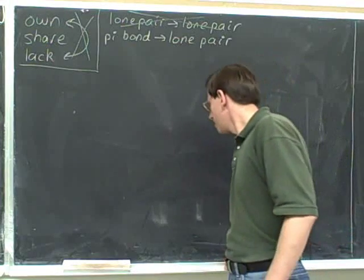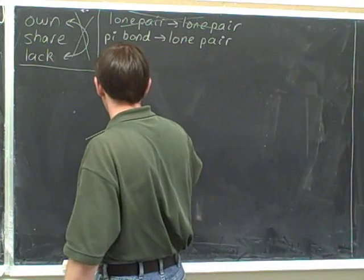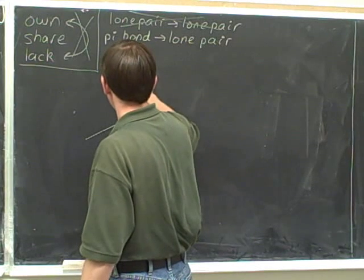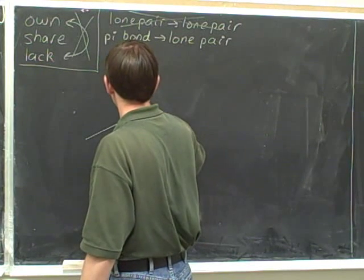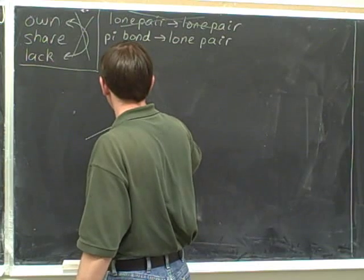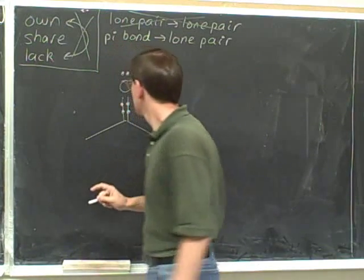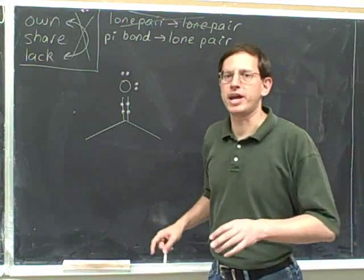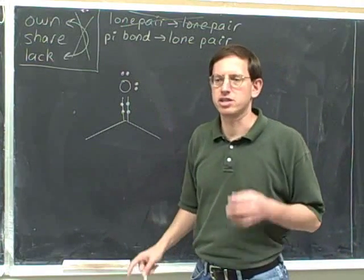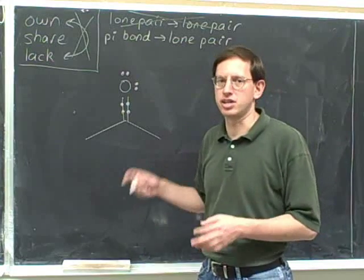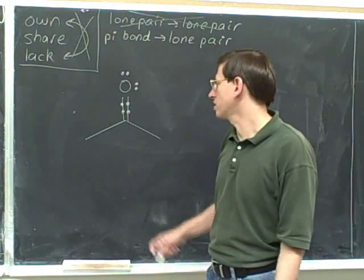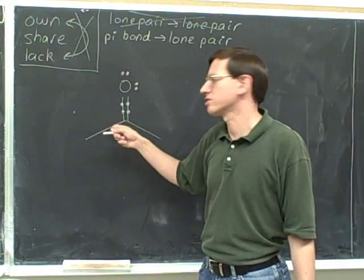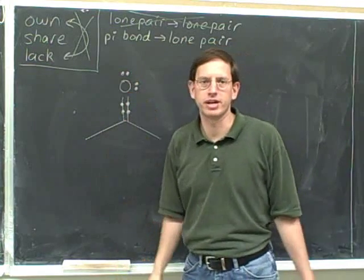Let me show you why that is. Here I've drawn a molecule of acetone. We don't normally draw all the lone pairs, but here I'm going to draw them to make it easier to see whether the oxygen is exceeding an octet. I'm also drawing the pairs of electrons in the sigma and pi bonds, so I'm drawing all the pairs of electrons around this oxygen.